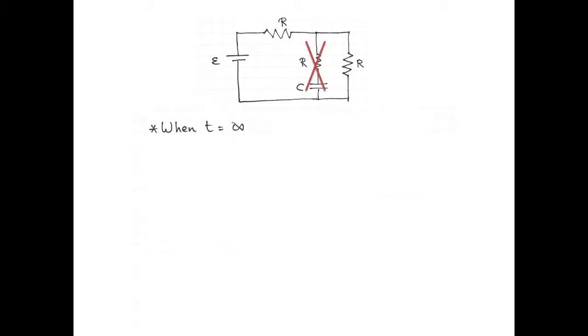Now let's look at the situation after a long, long time. Once the capacitor is fully charged, there's no more current that goes through its branch. So we can redraw the circuit, ignoring the branch of the capacitor, like so. The total current is equal to the EMF divided by the total resistance of the circuit, which is just 2R now.